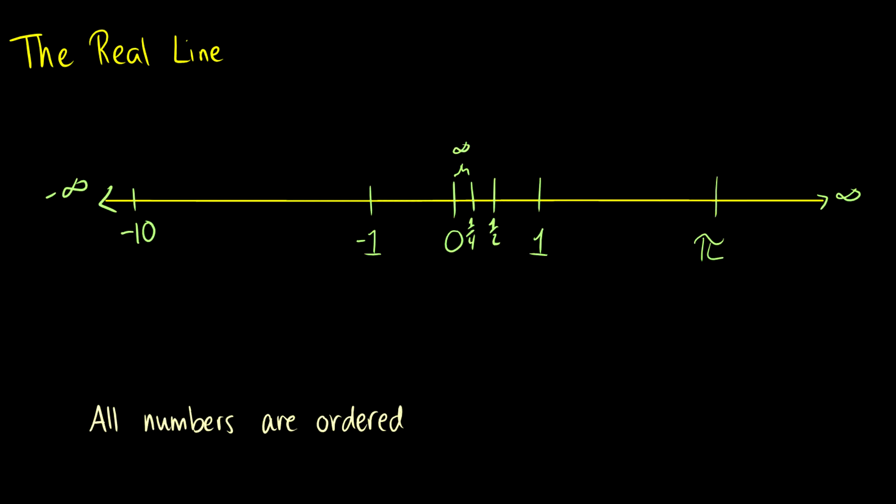In fact between the numbers 1 and pi on the real line there's going to be an infinite amount of numbers. In fact between any two numbers on the real number line there are an infinite amount of numbers. So wrap your brain around that one.